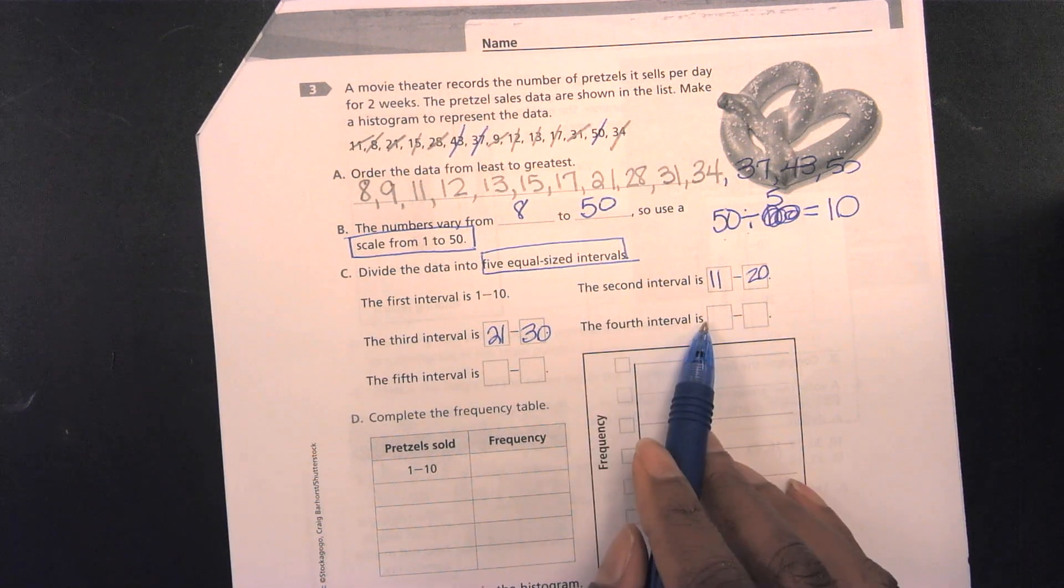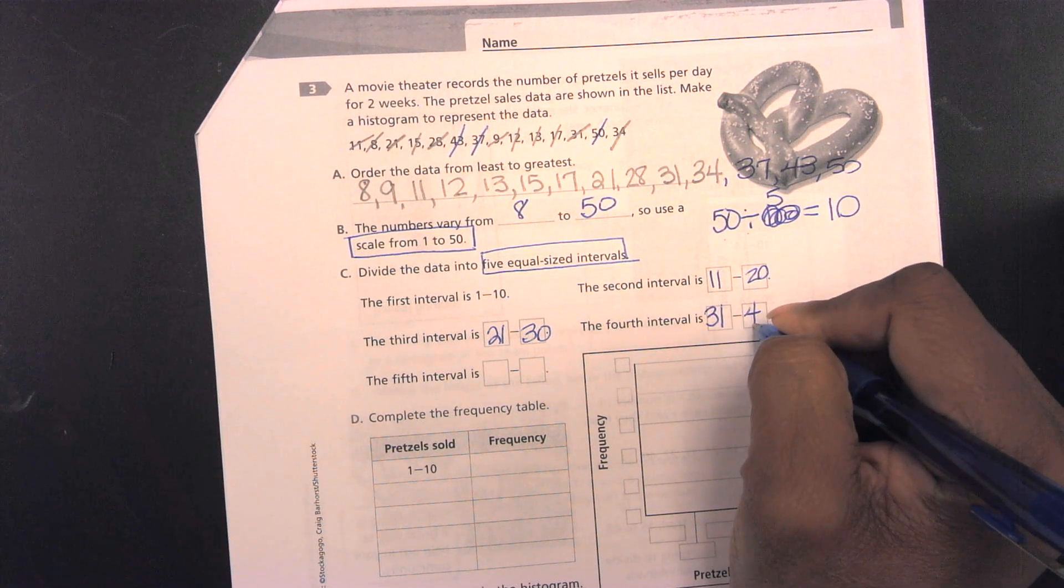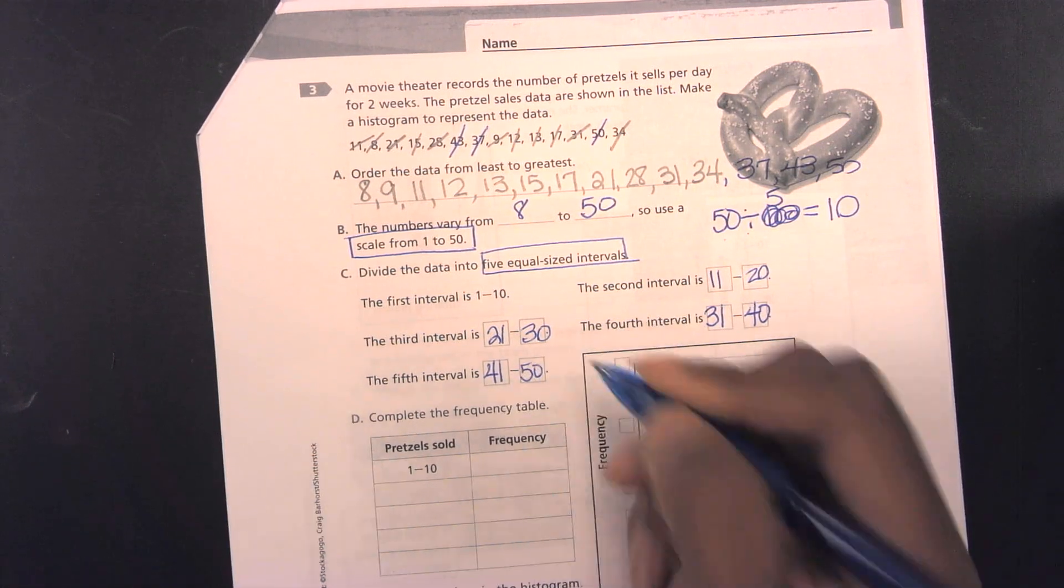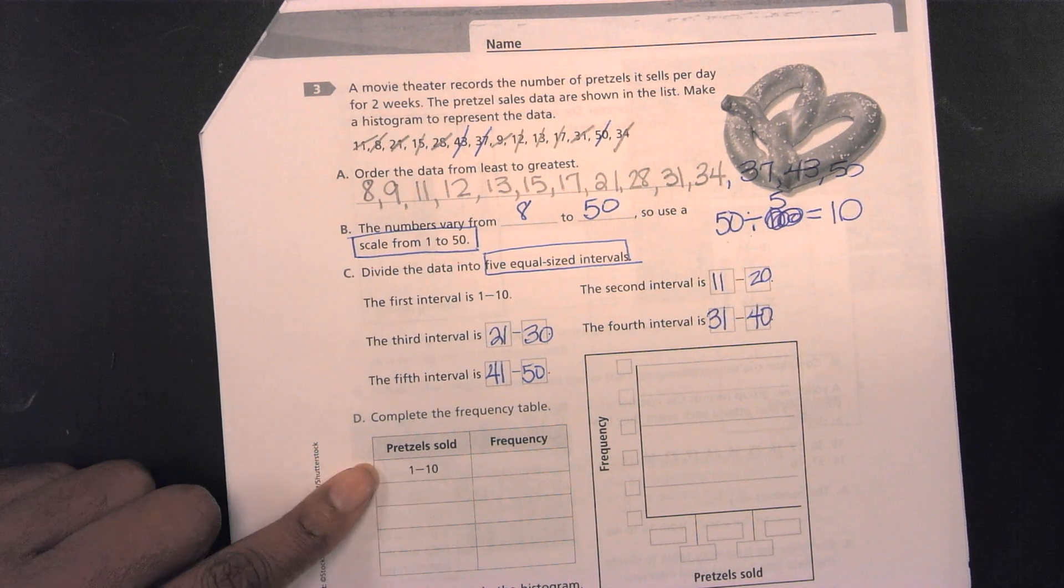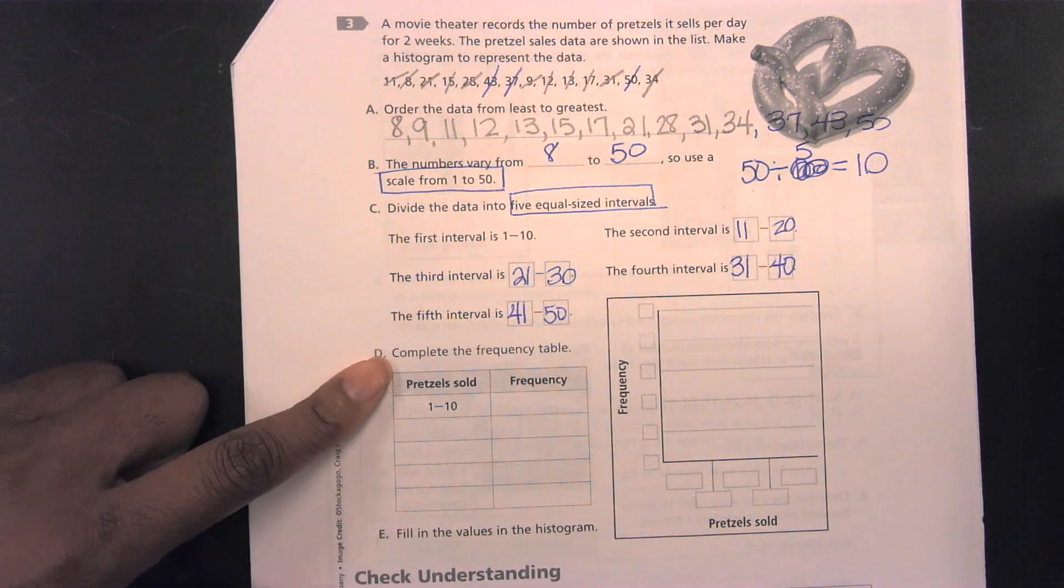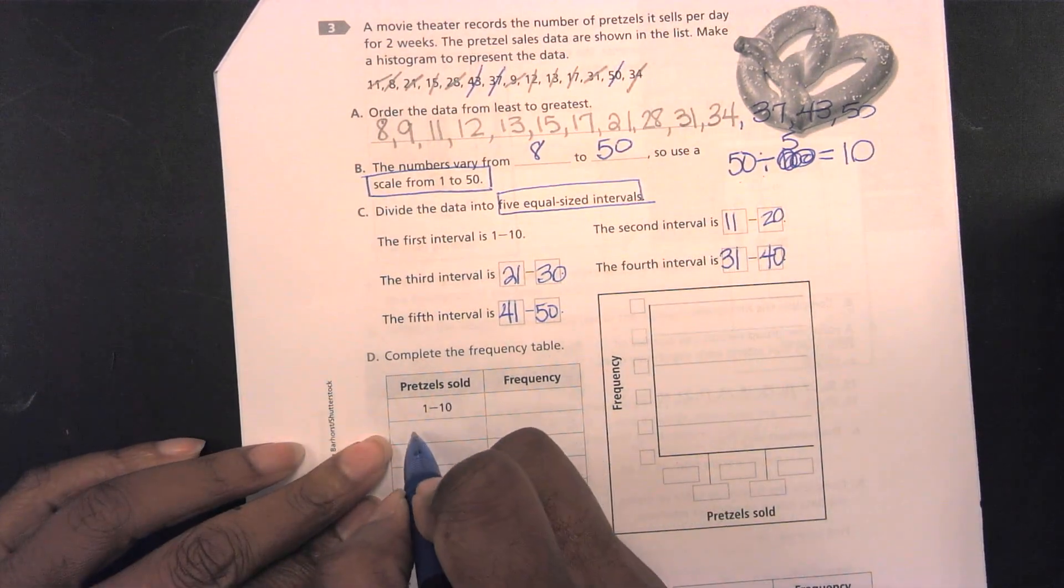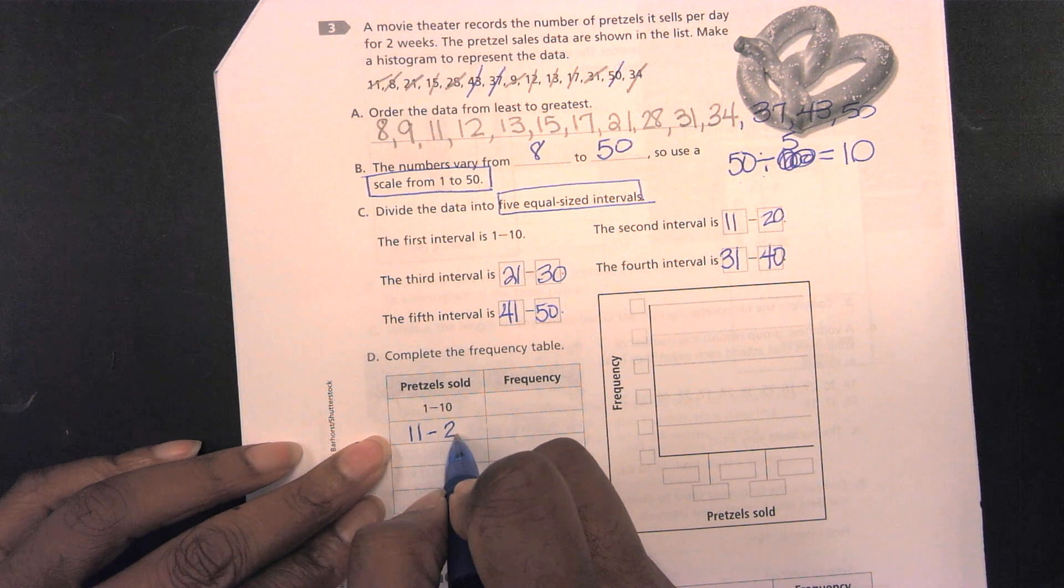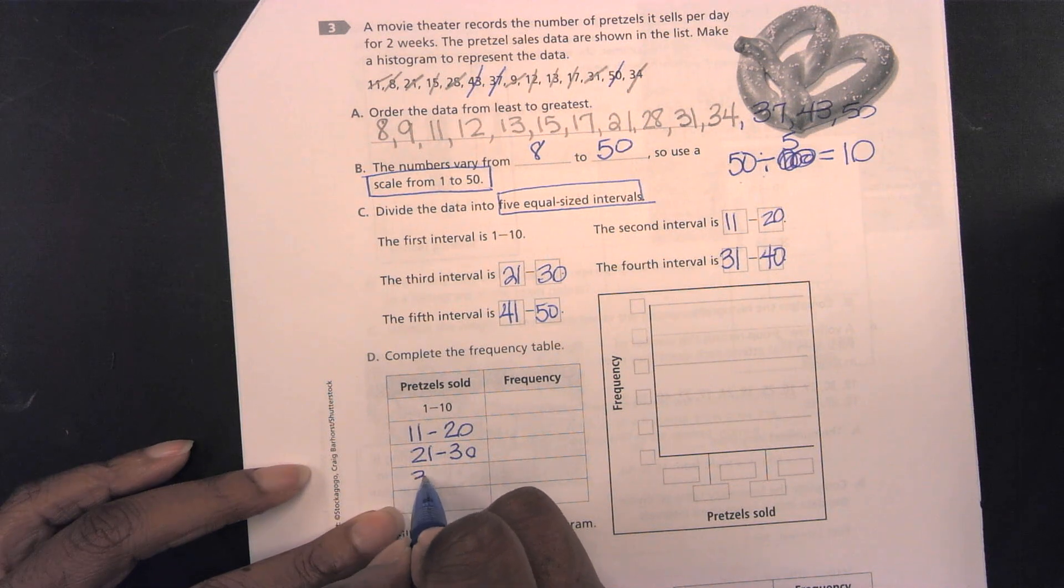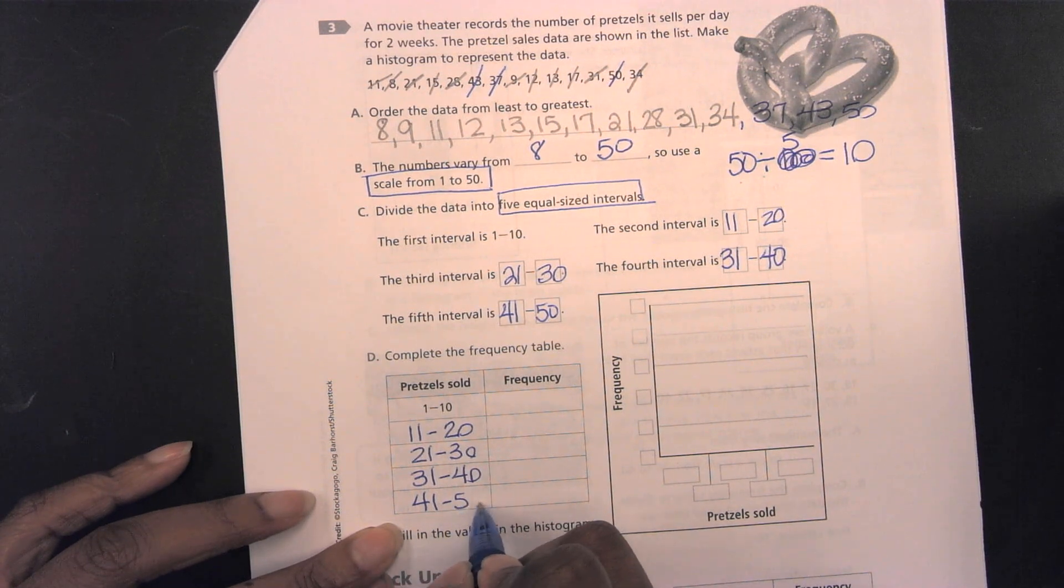Going forward, the next fourth interval will be 31 through 40. Then, we will have 41 to 50. So, those are all of our intervals. Now, the intervals are representing the pretzel sold. So, here, we're going to write those same intervals which represent the pretzel sold. So, I have 11 to 20, 21 to 30, 31 to 40, and 41 to 50.